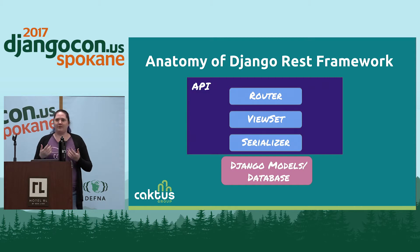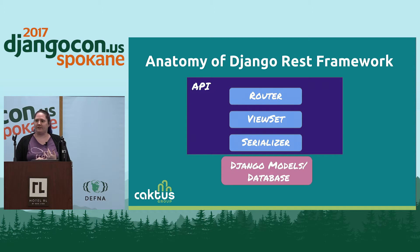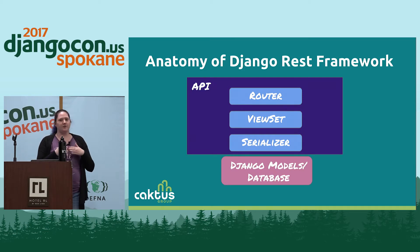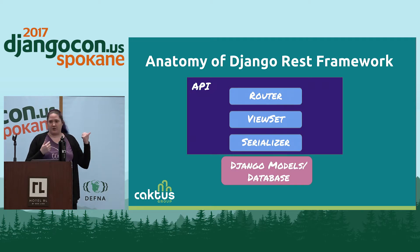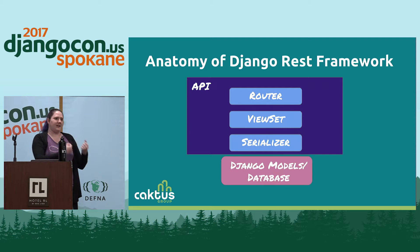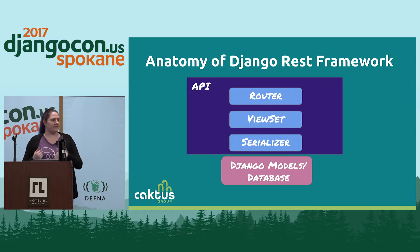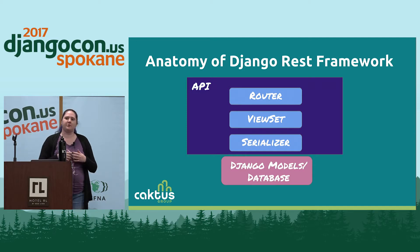Here's the anatomy of a Django REST Framework API. At the bottom you've got your existing Django models, which handle your database. On top of that, the next layer is your serializer — a piece of Django REST Framework that takes your model information and parses it into a format, going in both directions, that the view set can work with. The view set is the next layer, and it handles whether you're creating a new instance, updating an instance, or getting a list of instances. And then on top of that is the router, which handles the actual access via the URLs.